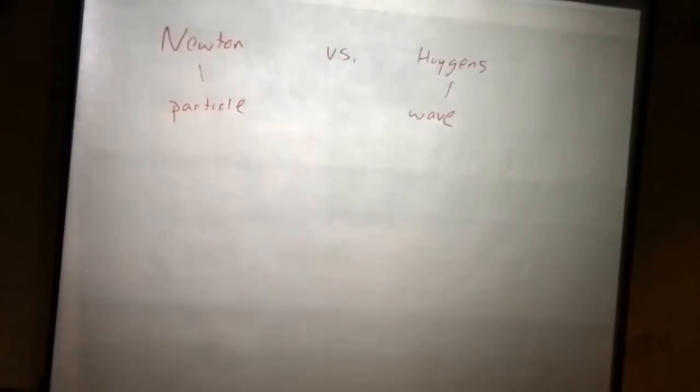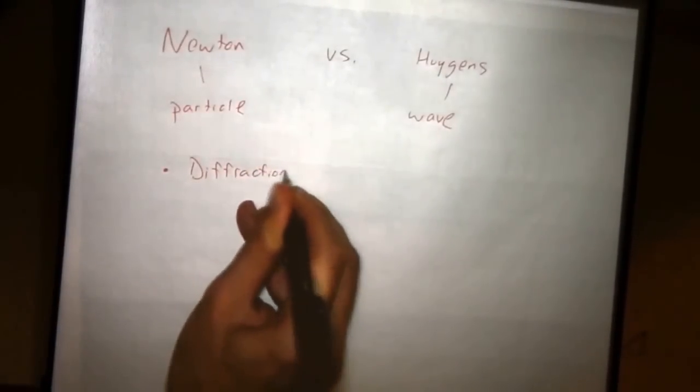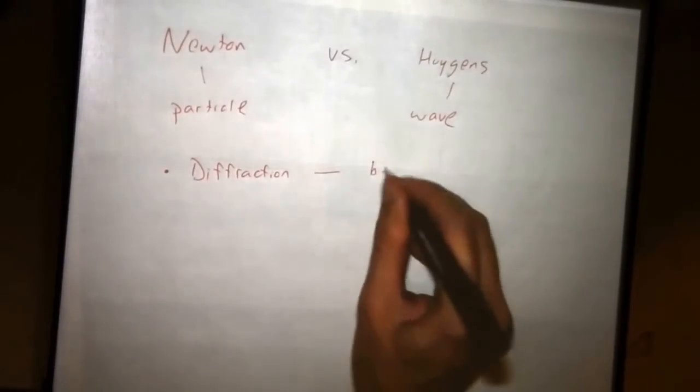They made their arguments, and later on through history these things were tested. There are three primary tests. The first test is diffraction. Diffraction is the bending of waves.